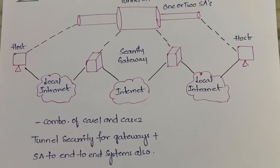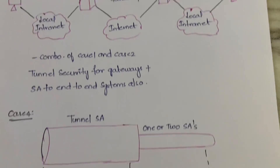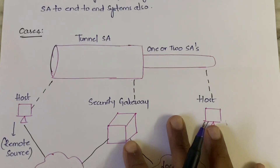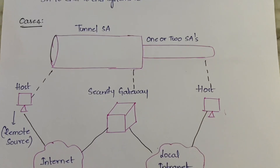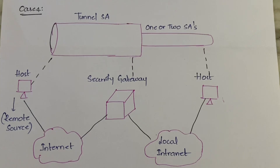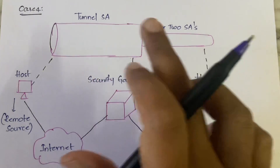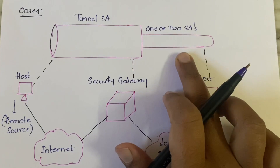Case three provides security to both the host as well as to the gateways. Moving on to case four — in case four we have a tunnel SA and one or two simple SAs.